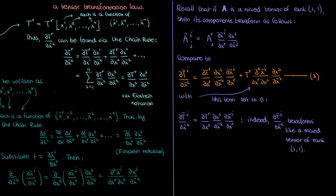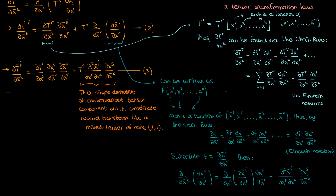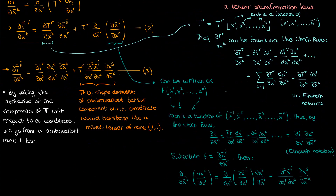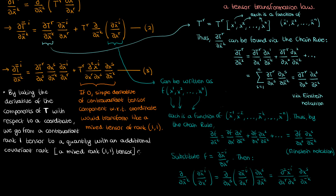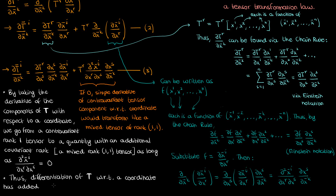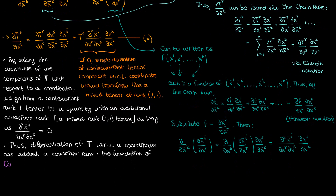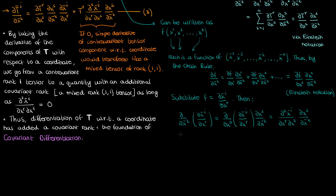As long as this mixed partial is 0, that's the key. So by taking the derivative with respect to a coordinate of the component of our tensor t, we go from a contravariant rank 1 tensor to a mixed tensor that has the contravariant rank but now also has a covariant rank — again, only as long as our mixed partial derivative term is 0. Differentiation of our contravariant tensor with respect to a coordinate has added to it a covariant rank. This addition of the covariant rank is why differentiating a tensor forms the foundation of covariant differentiation — the action of taking a partial derivative of a tensor component with respect to a coordinate adds on a covariant rank to that tensor component, hence covariant differentiation.